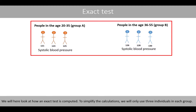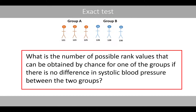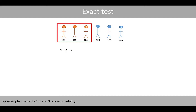To simplify the calculations, we will only use three individuals in each group. We first rank the individuals according to their systolic blood pressure. What is the number of possible rank combinations that can be obtained by chance for one of the groups if there is no difference in systolic blood pressure between the two groups? For example, the ranks 1, 2, and 3 is one possibility.